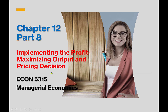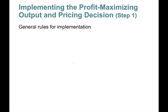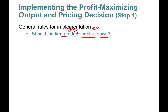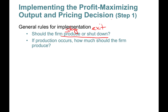Hello everyone, this is Chapter 12 Part A. In this part we'll talk about implementing the profit-maximizing output and pricing decisions. We will talk about the general rules for implementation: should the firm produce or shut down? Produce means stay in the short run; shutdown means exit in the short run. And if production occurs, how much should the firm produce — what's the optimal level of quantity Q* that maximizes your profits?